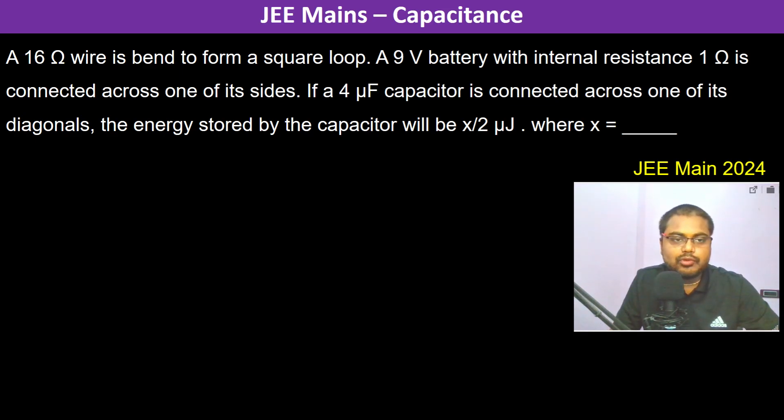A 16 ohm wire is bent to form a square loop. The total is 16 ohm, so this is going to be 4 ohm, 4 ohm, 4 ohm, and this is also 4 ohm.